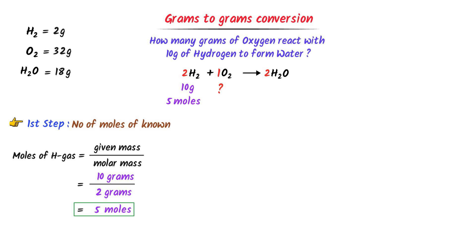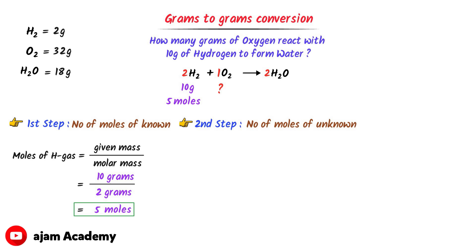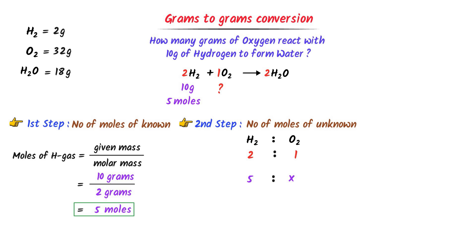In the second step, I find the number of moles of the unknown species, oxygen gas. I establish the ratio between H₂ and O₂, which is 2:1. With 5 moles of H₂ reacting with x moles of O₂, I cross-multiply: 2x = 1×5, giving x = 2.5 moles. Hence 5 moles of hydrogen gas react with 2.5 moles of oxygen gas.